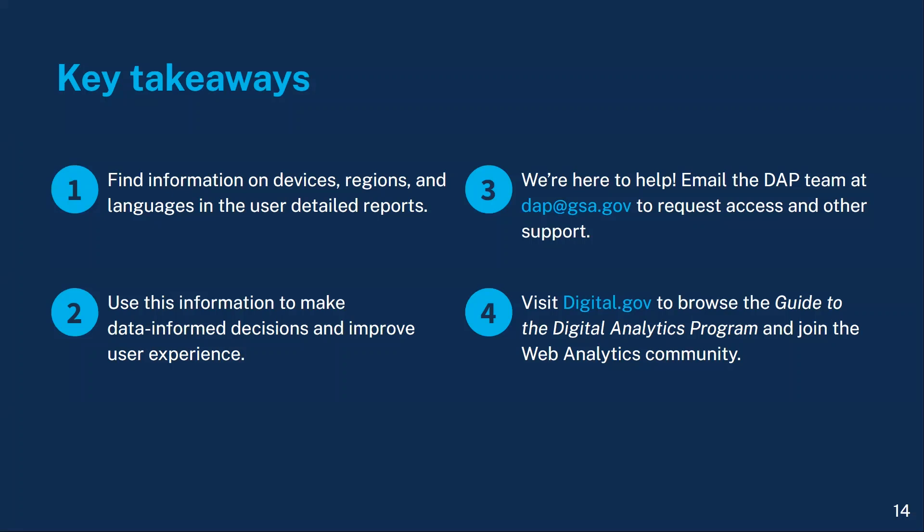Thank you for watching this talk about how to find information on user devices, regions, and languages in GA4. We hope you walk away with four key takeaways. First, you can find information on devices, regions, and languages in the user detailed reports. Second, use this information to make data-informed decisions and improve user experience. Third, email the DAP team at dap@gsa.gov to request access and other support. Last but not least, take advantage of the online documentation available at digital.gov/guides/DAP and join the web analytics community at digital.gov/communities.